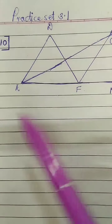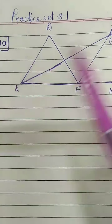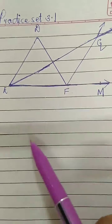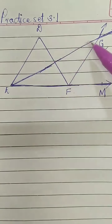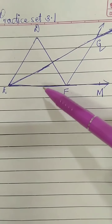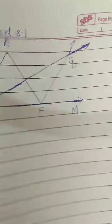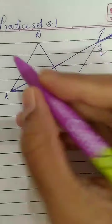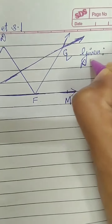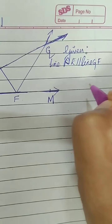Hello and welcome, dear students. We are continuing with Practice Set 3.1, the 10th sum. The figure is given, and the information given is that line DE is parallel to line GF. Let us write that in the 'Given' section: line DE is parallel to line GF.